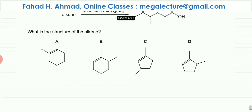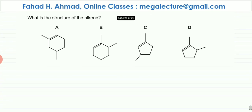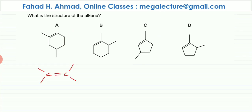To figure out the structure, we need to oxidize each of the given options one by one. The rules for strong oxidation of alkenes involve the double bond completely breaking, leading to three different scenarios — let's discuss those scenarios.